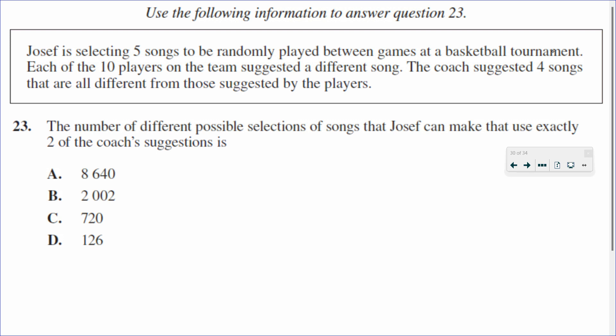We want to know the number of different possible selections that Joseph can make using exactly two of the coach's songs, plus three songs from the players, to get five songs altogether.